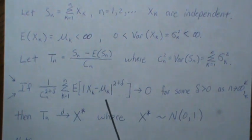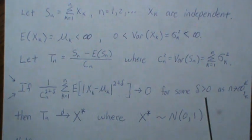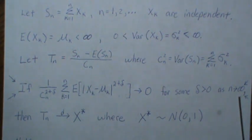This converges to zero for some delta and of course as n goes to infinity.